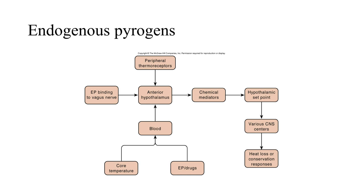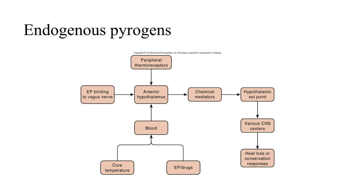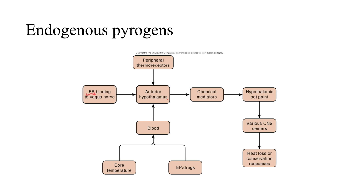We have this really just broken down. We've got our peripheral thermoreceptors, our hypothalamus. We've got endogenous pyrogen binding to the vagus nerve and then binding in the hypothalamus. We have these endogenous pyrogens eventually changing the hypothalamic set point and telling the central nervous centers to maintain that temperature and to suppress these typical compensatory mechanism of heat loss or heat conservation.